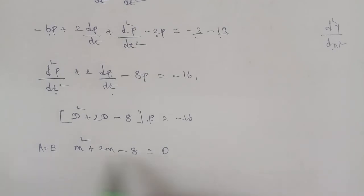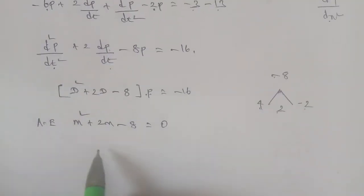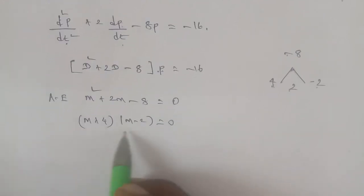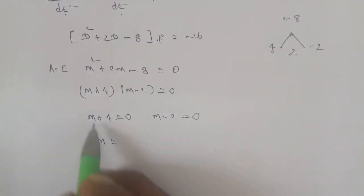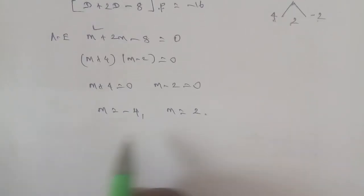Solving m² plus 2m minus 8 equals 0, factoring gives (m + 4)(m - 2) equals 0. So m + 4 equals 0 and m - 2 equals 0, giving m equals minus 4 and m equals 2. These are two different roots.